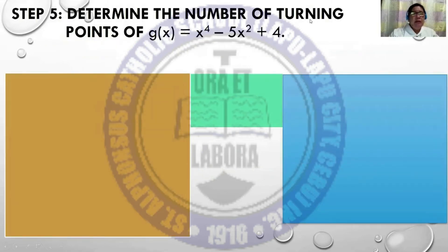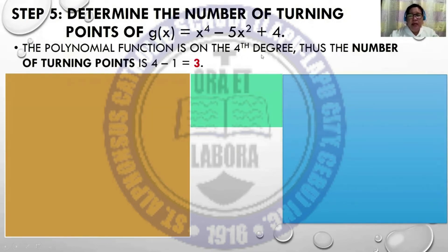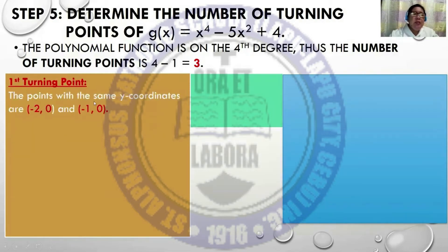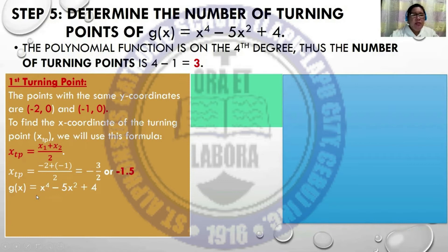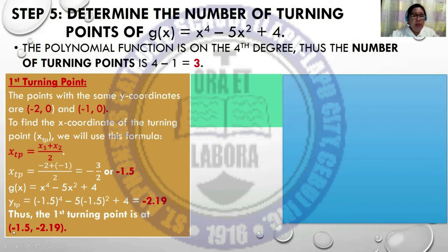For Step 5, determine the number of turning points. Since it is degree 4, that is 4 - 1 = 3 turning points. The first turning point: the points with the same y-coordinates are (-2, 0) and (-1, 0). Using the midpoint formula, the x-coordinate is (-2 + -1) / 2 = -3/2 or -1.5. Substituting -1.5 into the function gives approximately -2.19. Thus the first turning point is at (-1.5, -2.19).